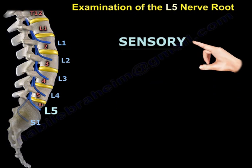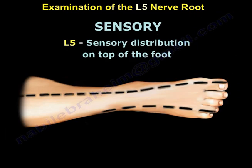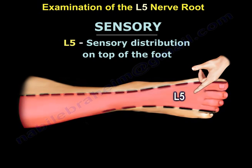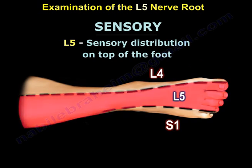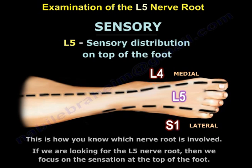When examining the L5 nerve root, the sensory examination is easy. You examine the sensation at the top of the foot. The top of the foot is L5, the medial side of the foot is L4, and the lateral side of the foot is S1. This is how we know which nerve root is involved.